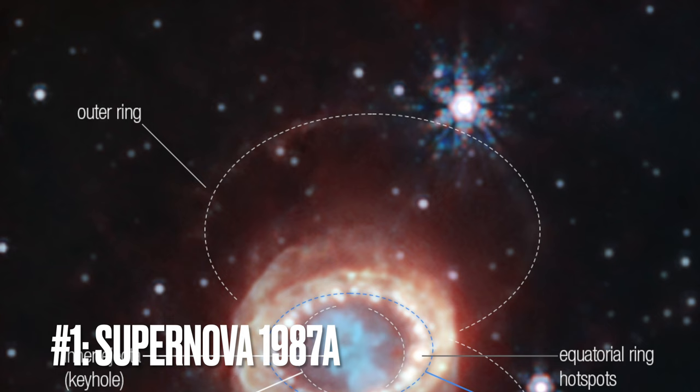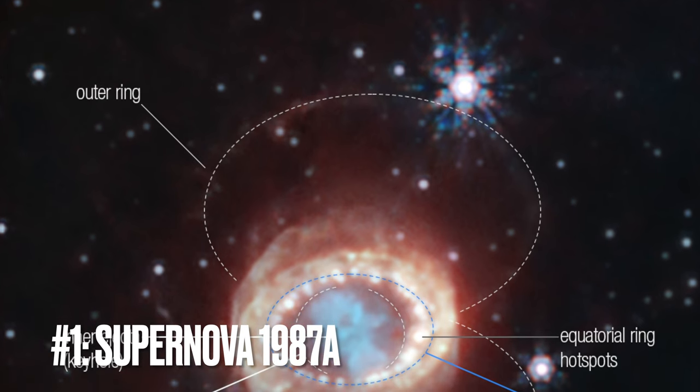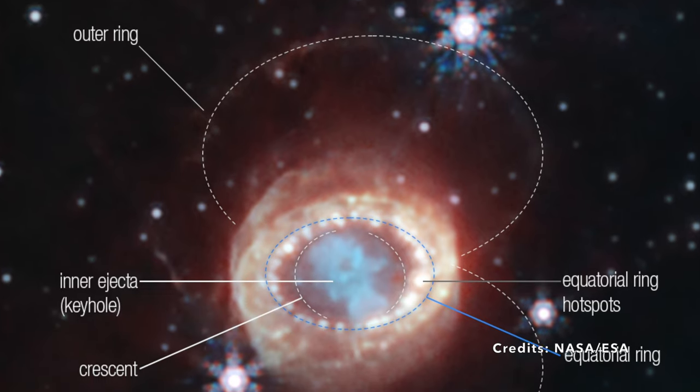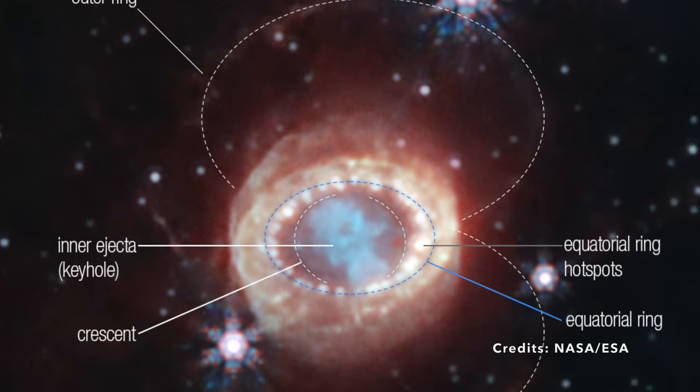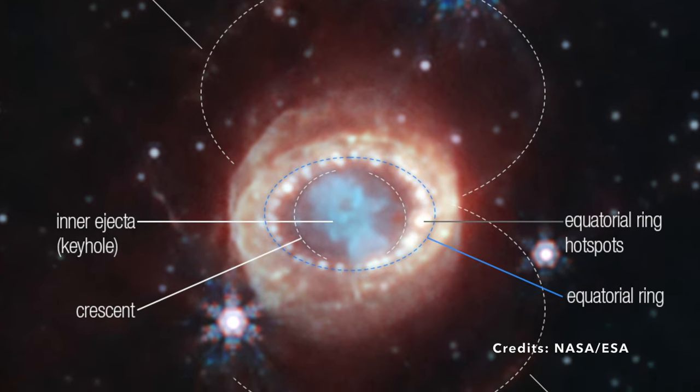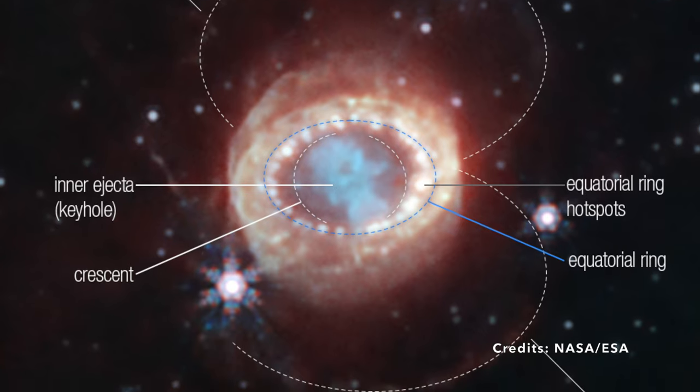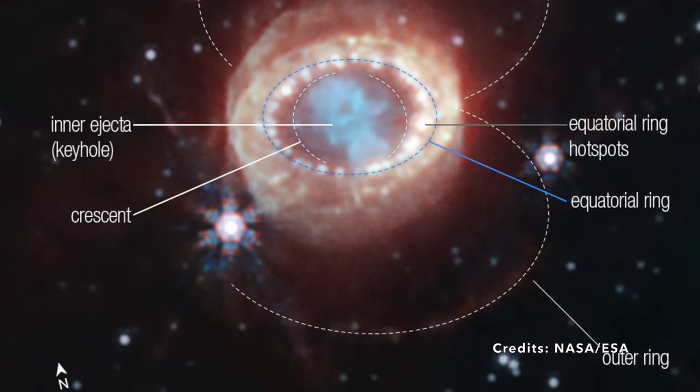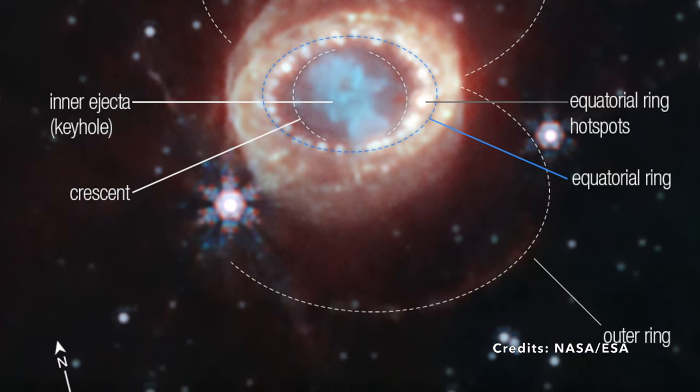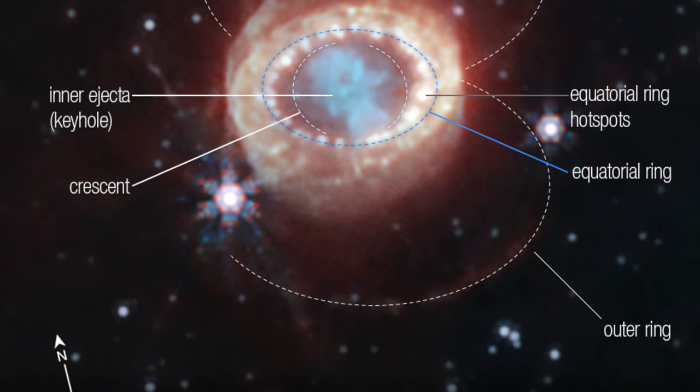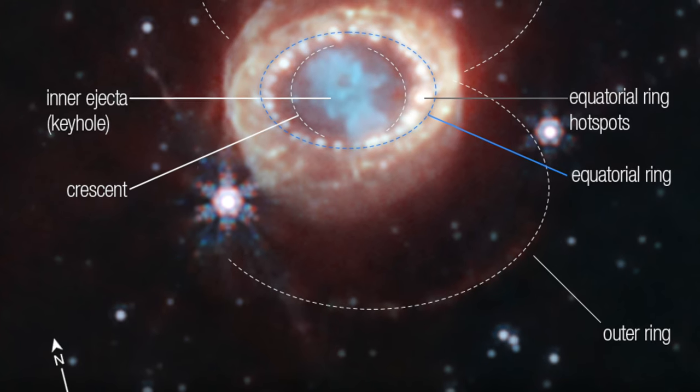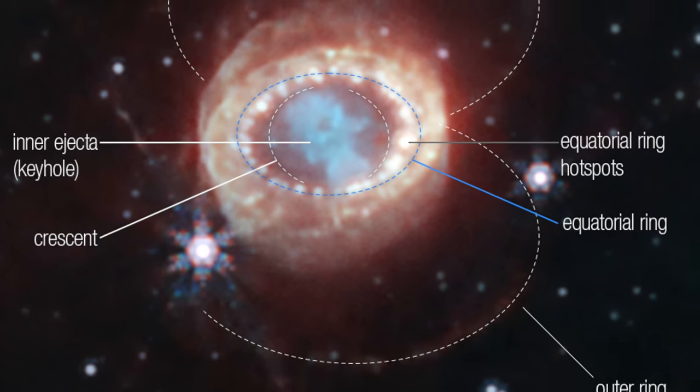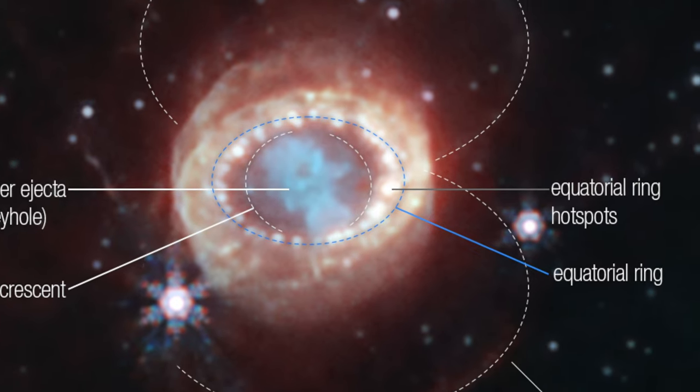Image number one: The Cosmic Puzzle of Supernova 1987A unveiling. A cosmic jigsaw that's as bewildering as it is captivating. Webb's near-infrared camera, better known as NERCAM, has recently offered us a deeply detailed glimpse of SN 1987A. What's a supernova, you ask? Imagine a star at the end of its life cycle, accumulating so much energy that it can no longer contain it. This star, finally giving in to its pent-up forces, explodes in a dazzling display of light and heat. That's a supernova.